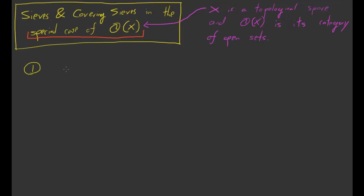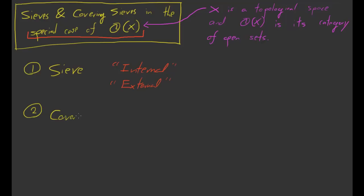There are two definitions we're going to do in this video. First we'll define a sieve, and I'd like to give two definitions of this: an internal definition and also an external definition. Both definitions are useful and enlightening in different contexts. First we'll define sieves, and then we'll define a special type of sieve called a covering sieve. As we'll see, this is a kind of specialization of the idea of an open cover — it's a very nice open cover.